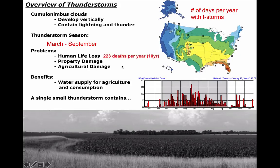When it comes to problems, our 10-year averages for losing lives to hail, severe winds, tornadoes, and flash floods: we're talking about 223 deaths per year on average. Property damage is about $12.5 billion. Add agricultural damage onto that — that's $2.4 billion — a lot of that coming from hail and straight-line winds.